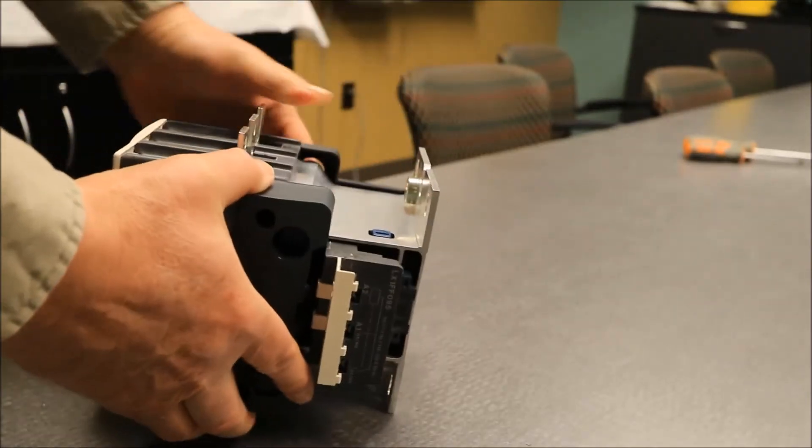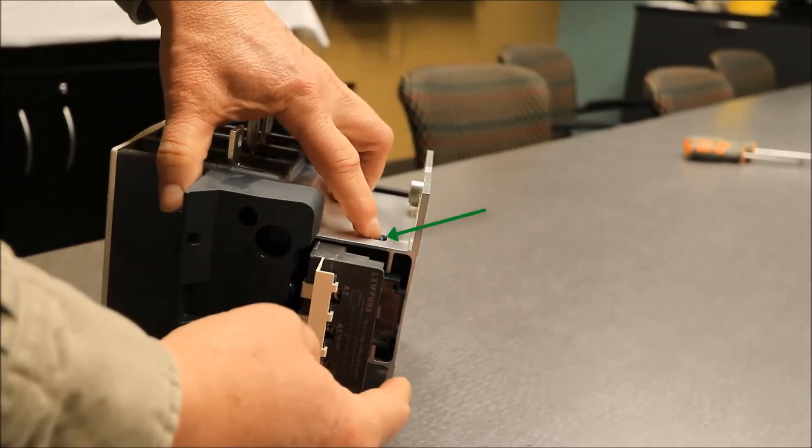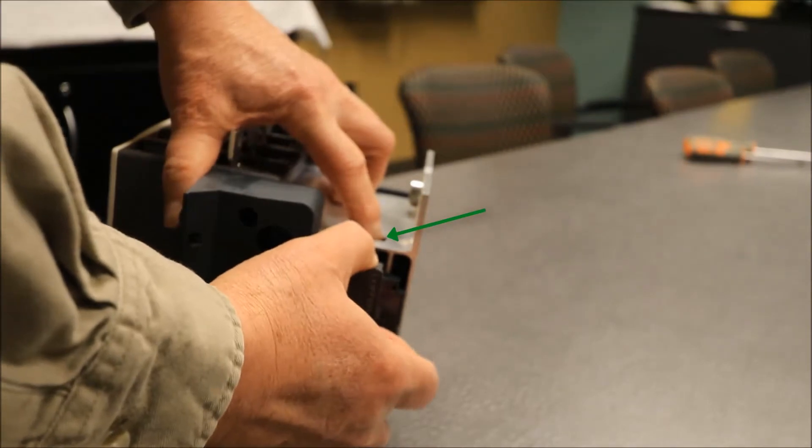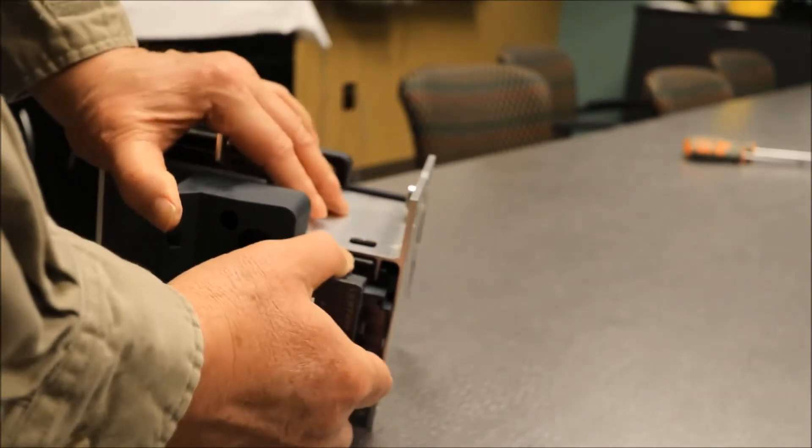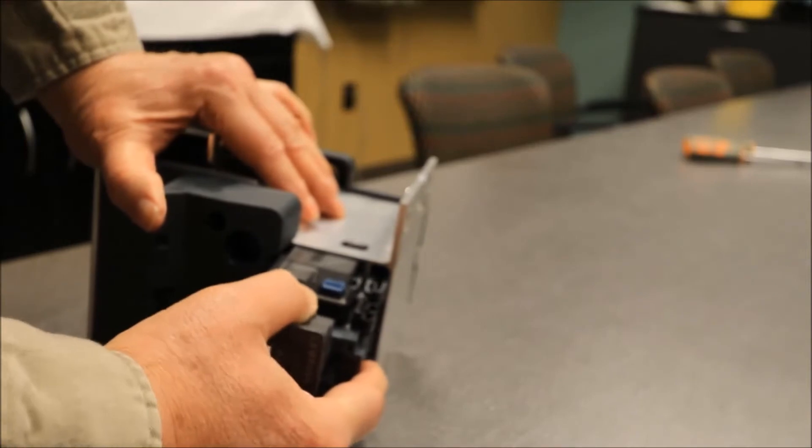In order to remove the coil, there's a little blue button that you have to depress and the whole magnet assembly and coil slide out.